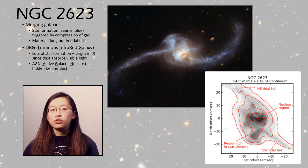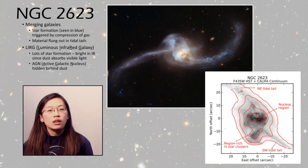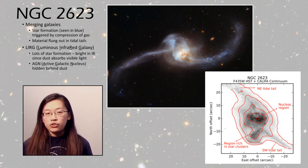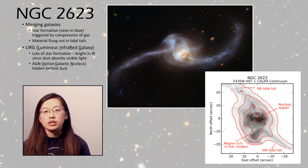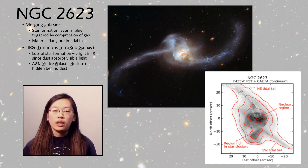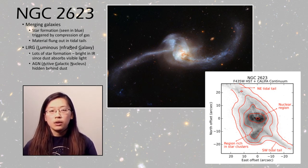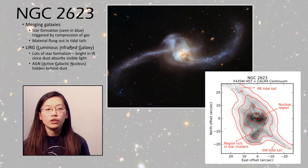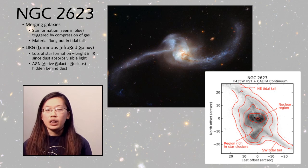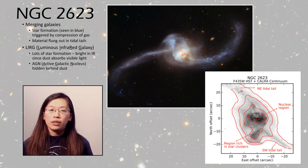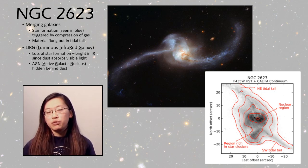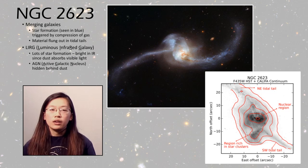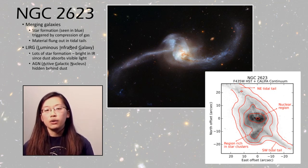Our next DSO is NGC 2623, a pair of merging galaxies. In the upper image you can see a lot of star formation shown in blue, because the young stars are generally very hot. All of this star formation has been triggered by the collision of the two galaxies as the gas collides and compresses. There are also tidal tails of stars and dust flung out by the gravitational interaction. This DSO is an LIRG, or luminous infrared galaxy, meaning the galaxy is very bright in the infrared because dust surrounding young stars absorbs a lot of visible light. It's also thought that there's an active galactic nucleus hidden behind all this dust.